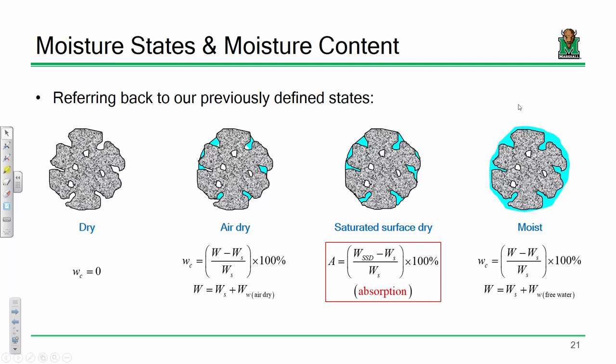Going back to the moisture states mathematically — when calculating moisture contents for air dry, moist, etc., it's the same formula but gives different answers because there are different amounts of water. We're still taking total weight minus dry weight divided by dry weight to get moisture content. The saturated surface dry condition is the only one with a special name — absorption, denoted A. All others are just generic water contents. The dry condition has water content of zero.